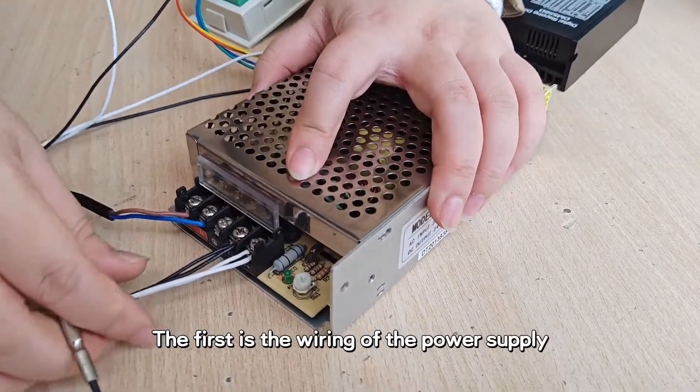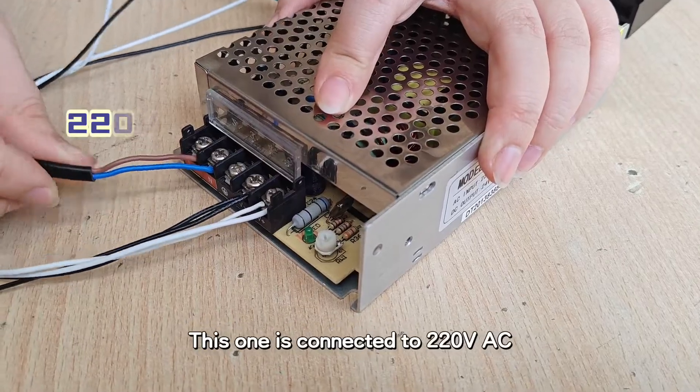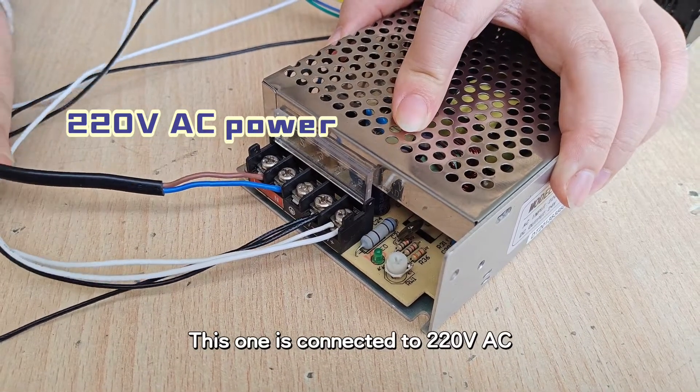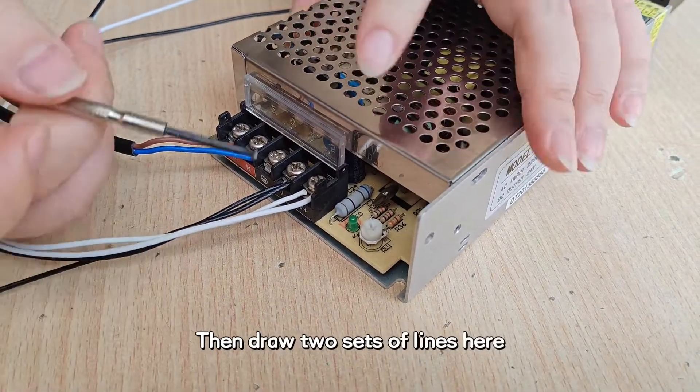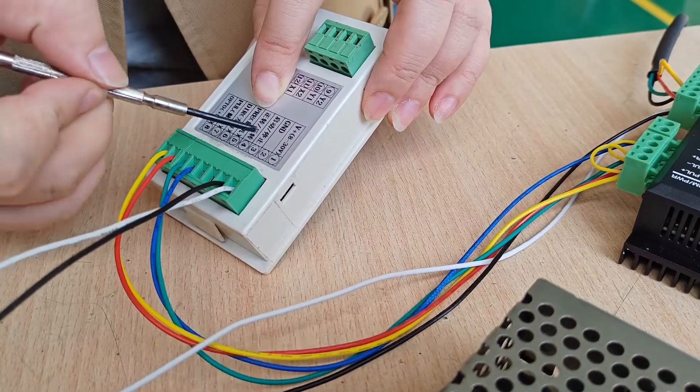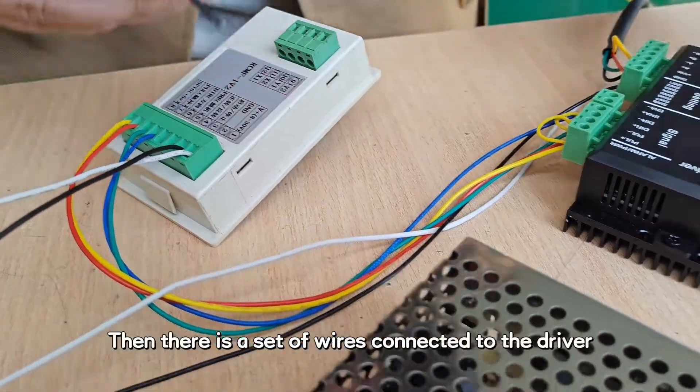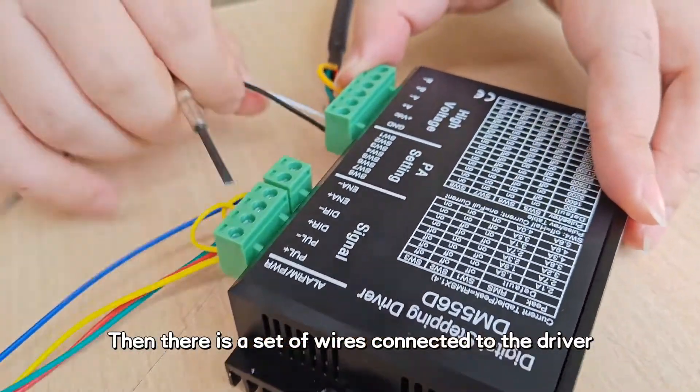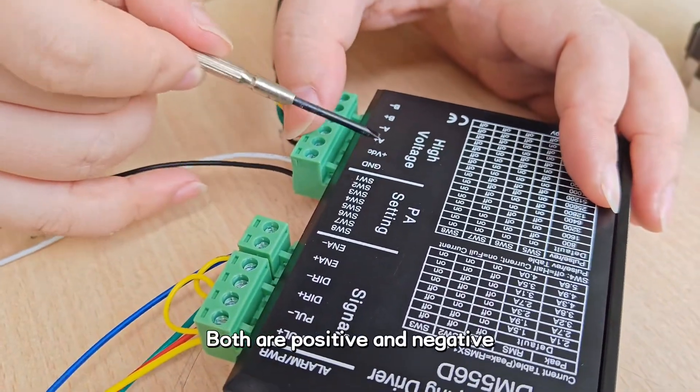The first is the wiring of the power supply. This one is connected to 220 volts AC. Then draw two sets of lines here. One is connected to our controller, positive and negative. Then there is a set of wires connected to the driver, both positive and negative.